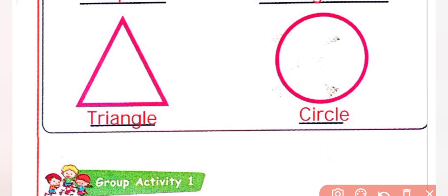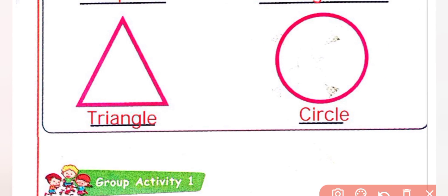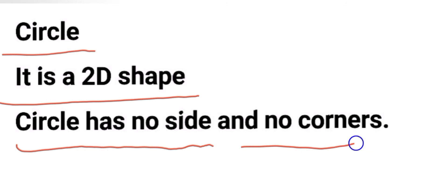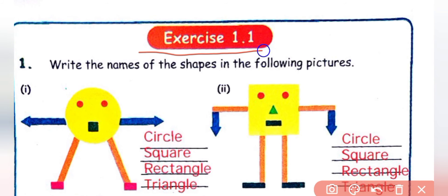Next shape — this is called circle — C-I-R-C-L-E, circle. Circle has no sides and no corners. It is a 2D shape.